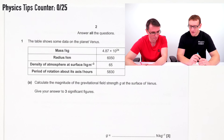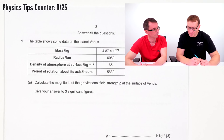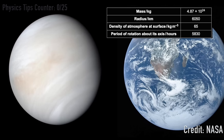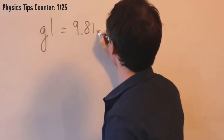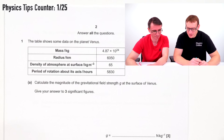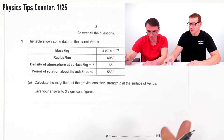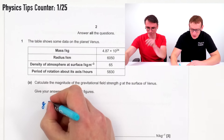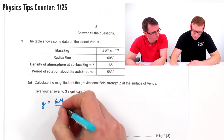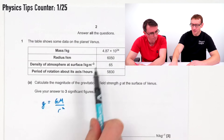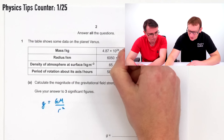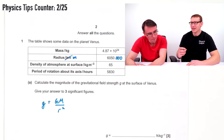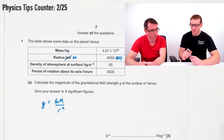The first question isn't too bad — it's about gravitational fields. There's lots of data, and it's Venus, so it's definitely worth checking which planet they're talking about. If you find yourself writing 9.81, just make sure you're on planet Earth. The first part asks us to calculate the gravitational field strength at the surface. From memory, g is equal to GM divided by r squared. The radius is in kilometres, so I'm going to convert that to metres now rather than forget later — that's a really good tip.